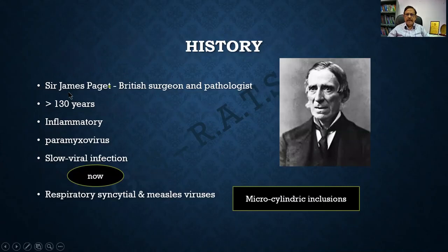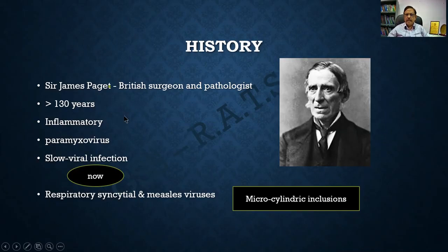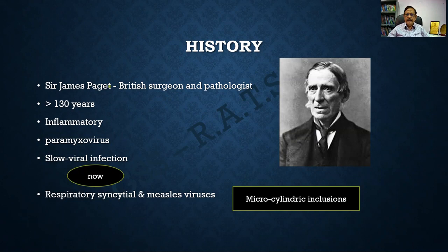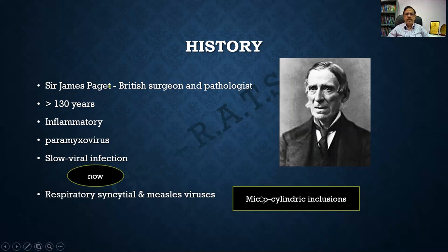Paget's disease was first identified by Sir James Paget, a British surgeon and pathologist. Nearly 130 years back he suggested a viral etiology as the cause of the disease, with paramyxovirus as the probable causative agent. Over the century there were many debates, and now people have agreed that it is because of a viral infection, probably respiratory syncytial virus or measles virus.